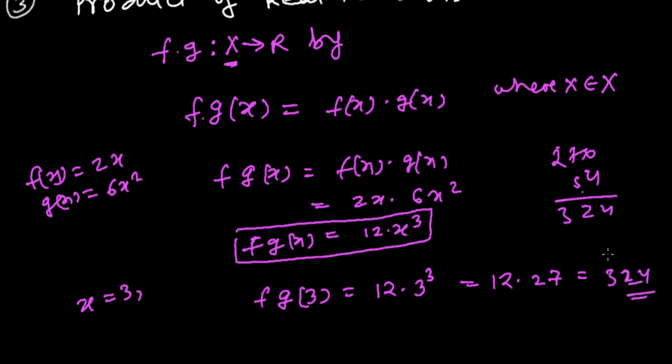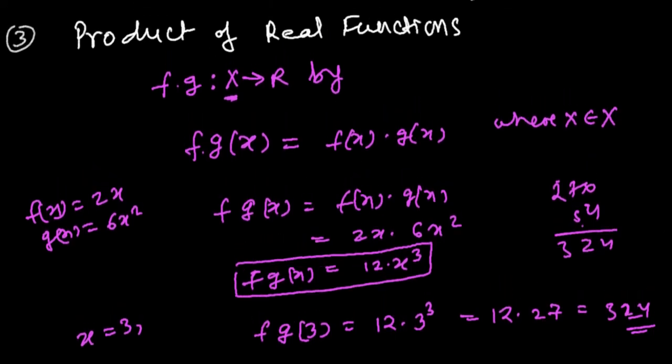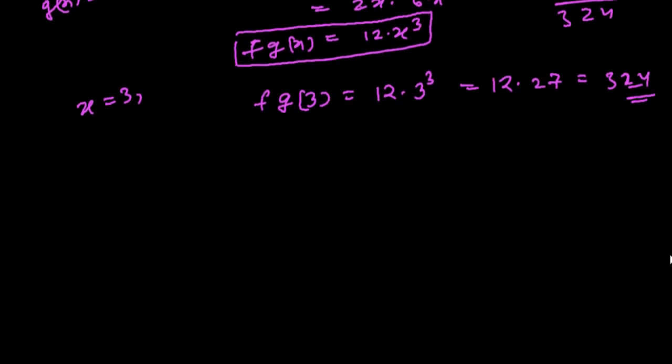So this is how we have to find out the product of two or more than two real functions. And the next algebra of real functions will be like whenever a scalar is going to multiply a real function, then what happens. Then we're going to learn multiplication by a scalar.